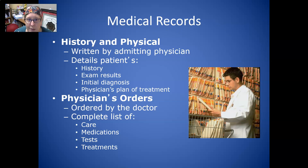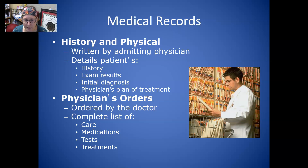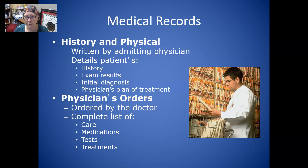The history and physical is written by the admitting physician, and details the patient's history, exam results, initial diagnosis, and the physician's plan of treatment. It is often followed by the physician's orders — these are the orders that the doctor has written. Oftentimes now in electronic medical records, the doctors can enter their own orders into the system.